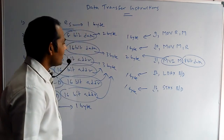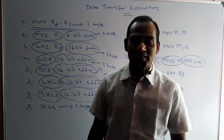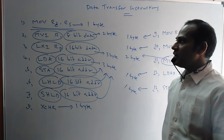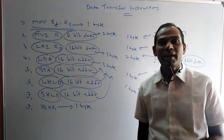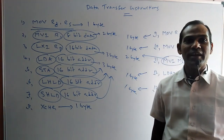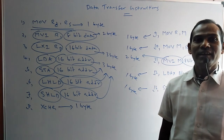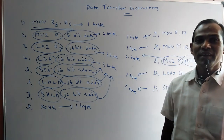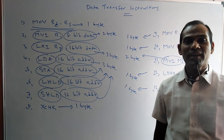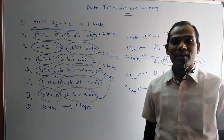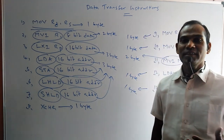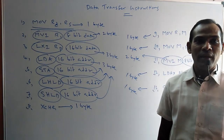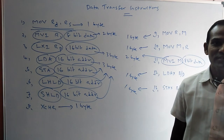That is all about the size of the instruction. There are three types: if only letters are present, it is 1 byte; letters followed by an 8-bit number gives 2 bytes; and letters followed by 16-bit data or a 16-bit address gives 3 bytes. Using this method, we can easily identify the size of any instruction. In the next lecture, we will discuss some more points about data transfer instructions.